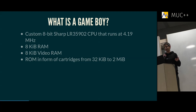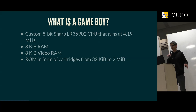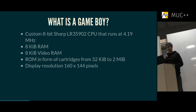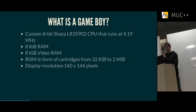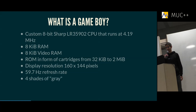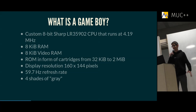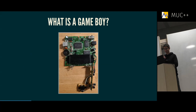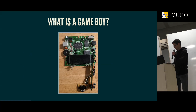It has ROM in the form of cartridges — those are the games — and those vary in size from 32 kilobytes up to 2 megabytes. It has a display with a resolution of 160 by 144 pixels that runs at roughly 60 Hz, and it can show four shades of gray — if you've ever seen a Gameboy, those are four ugly shades of green.